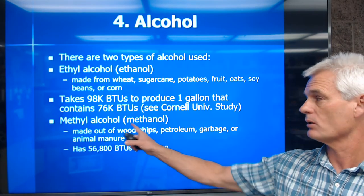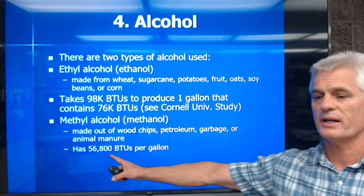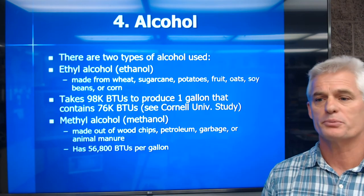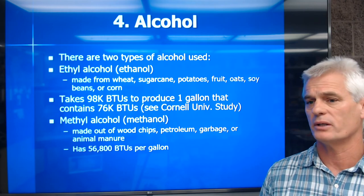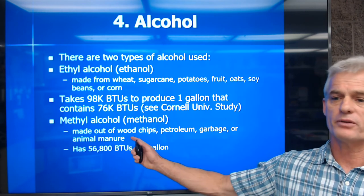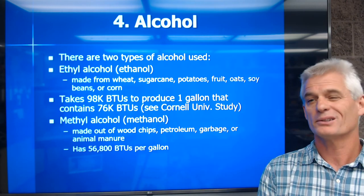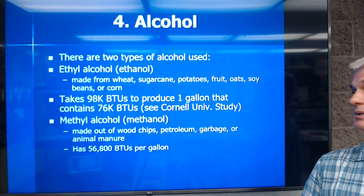Methyl alcohol — or methanol — is made from wood chips and garbage. It's even worse: it has about 56,800 BTUs per gallon, so we have a huge net energy loss. We have to burn a lot more fuel to do the same work. Gasoline is starting to look like pretty cool stuff.